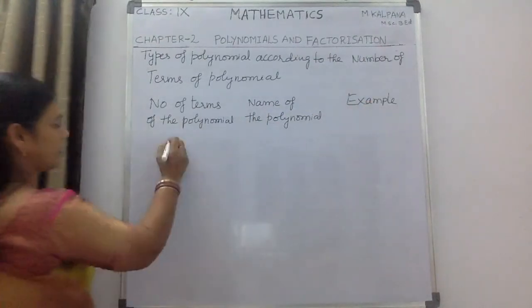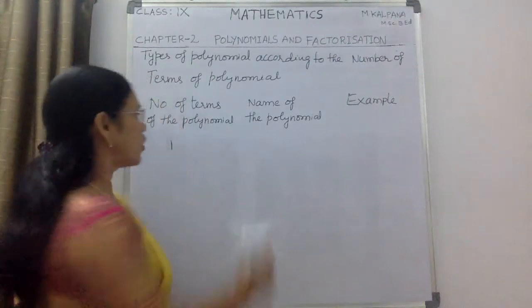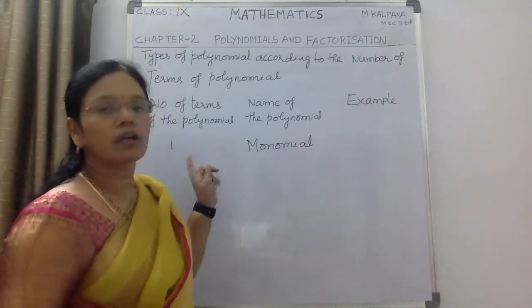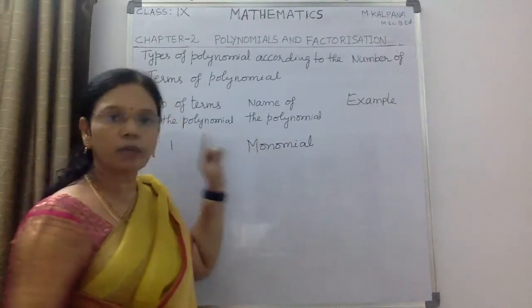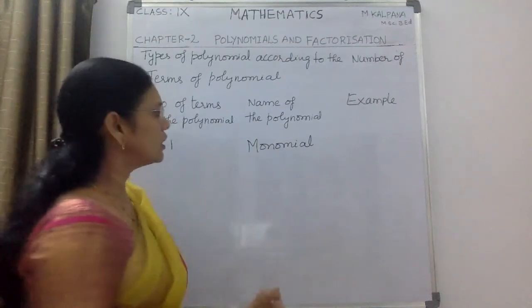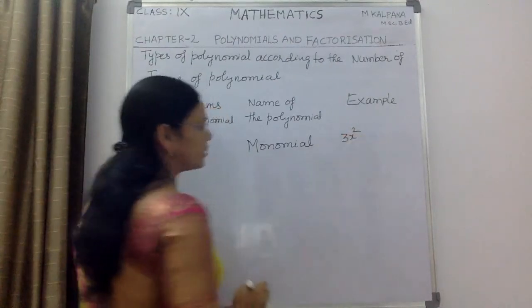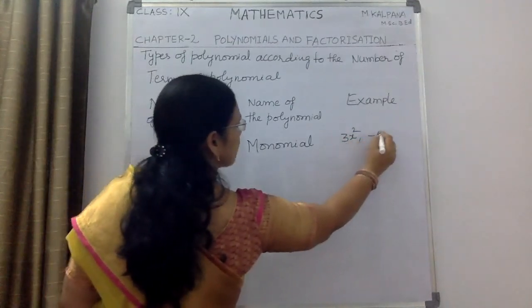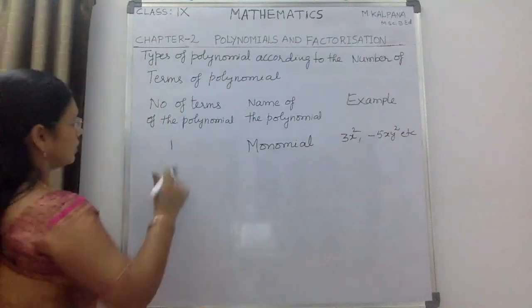If the number of terms is 1, the name of that polynomial is monomial. Mono means one, so a polynomial which has only one term is represented as a monomial. This is the special name given to an expression which has only one term. Examples include 3x, 3x², and -5xy².